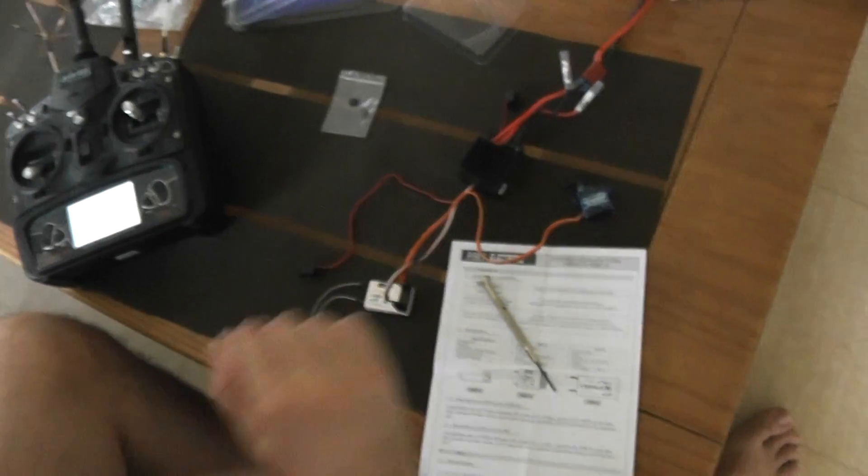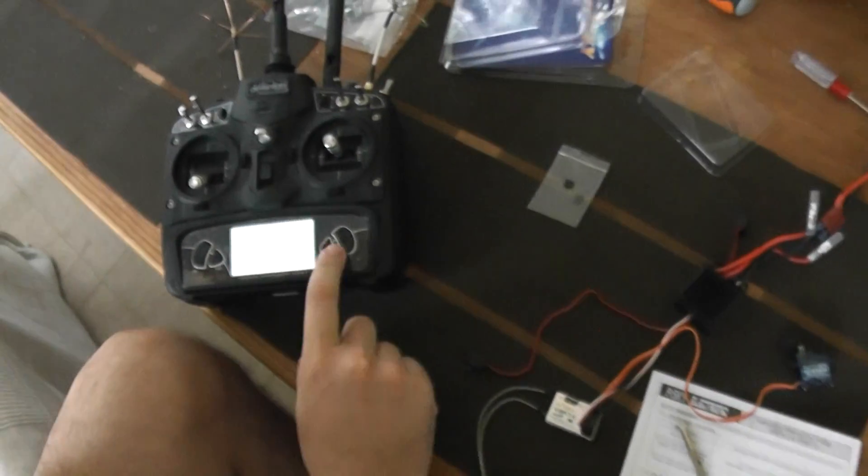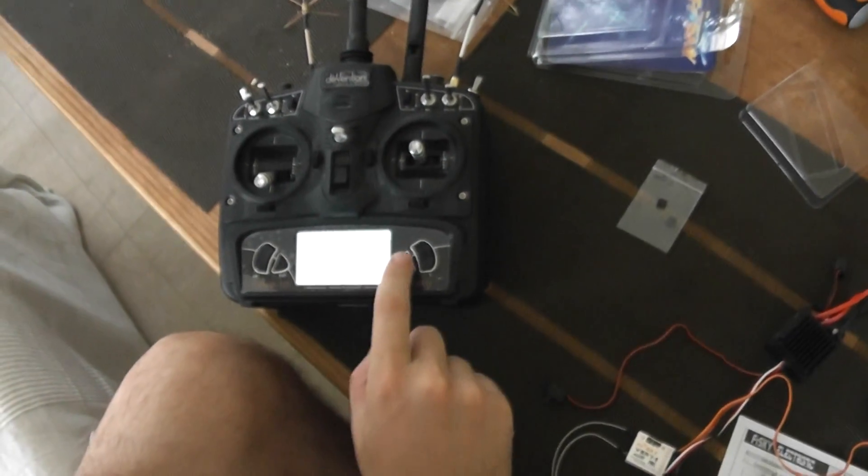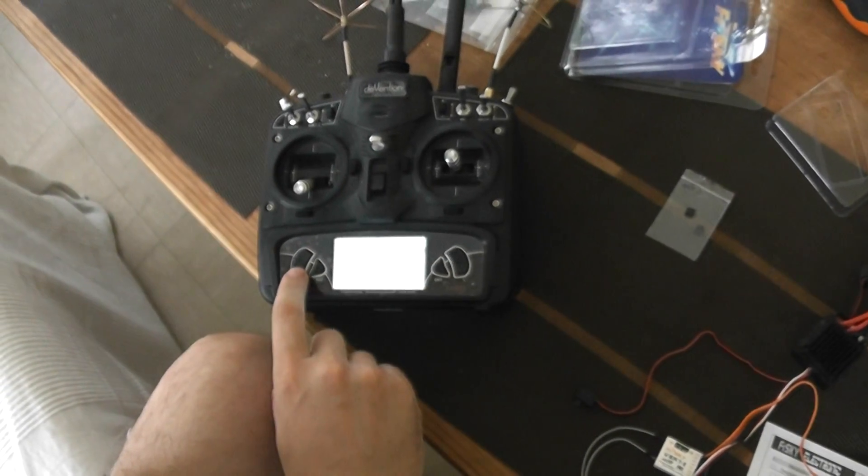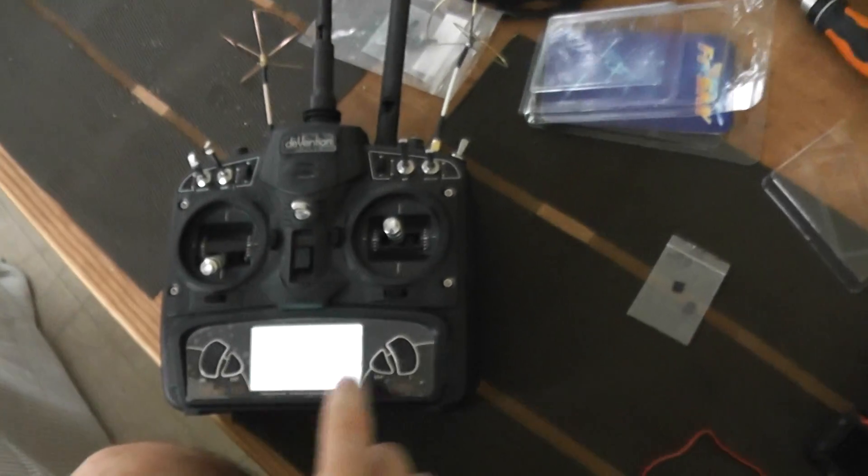So now I will do the same stuff but in D mode. So now on the Devo controller, I return to the config menu. And I will select, instead of V8,